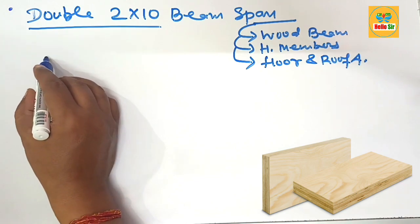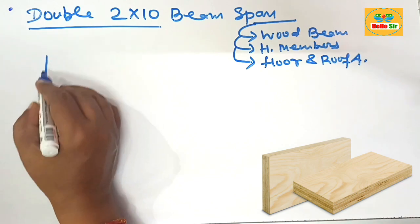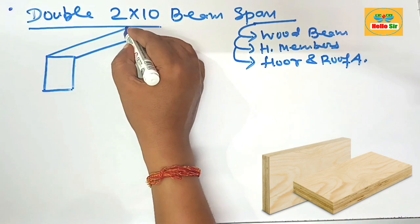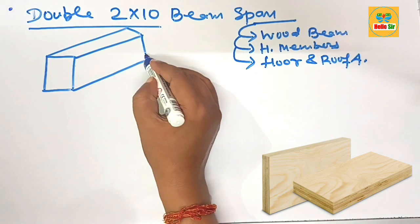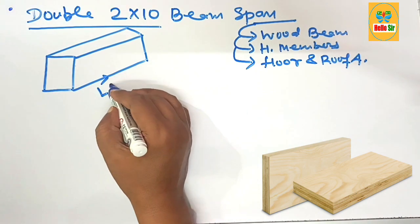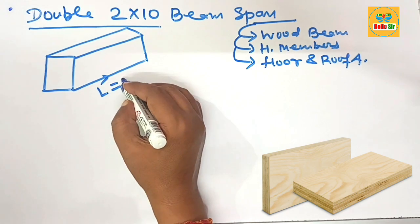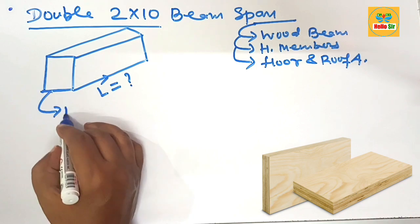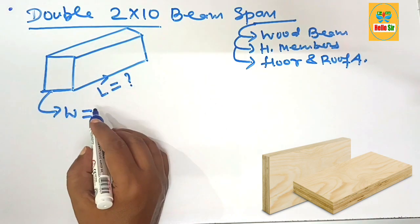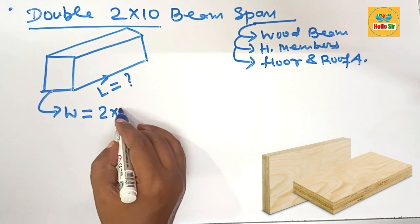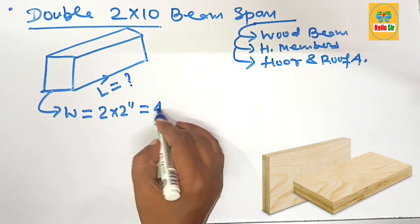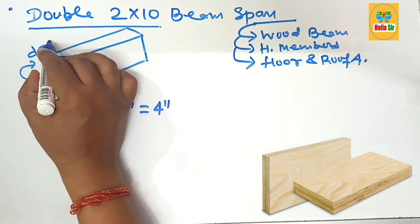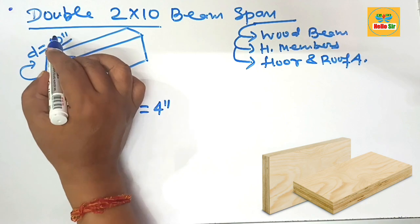First, understand the dimension for the double 2 by 10 wood beam. Here we make a rough diagram to understand the different dimensions of this wood beam. This one is the length of beam you have to figure out, the span length. And this one is the width section of beam which is double, means to multiply two inch, that equals four inches. And this one is the depth section of the beam which is about 10 inches.